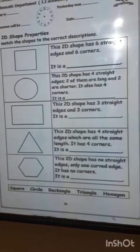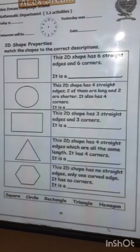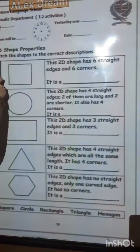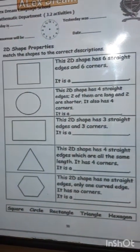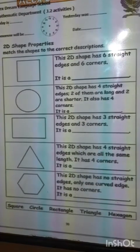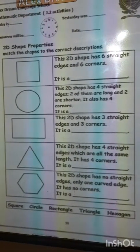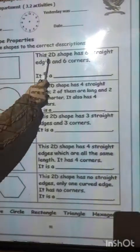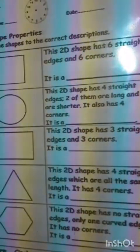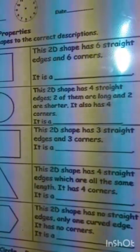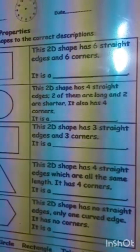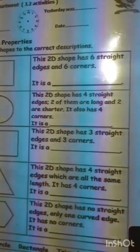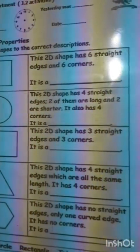Open your booklet page 90. Look here. Match the shapes to the correct descriptions. The first one. This 2D shape has six straight edges and six corners.